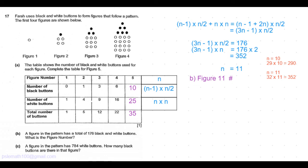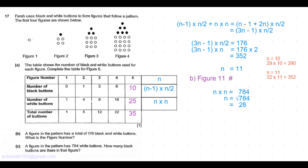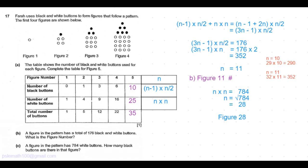Part C of the question is: a figure in the pattern has 784 white buttons. How many black buttons are there in that figure? So we know that the number of white buttons is represented by the formula n times n. So n times n is 784, which means n is equal to, we use the square root function in the calculator to get the value of 28, which means 28 times 28 will give us 784. So the figure number is 28.